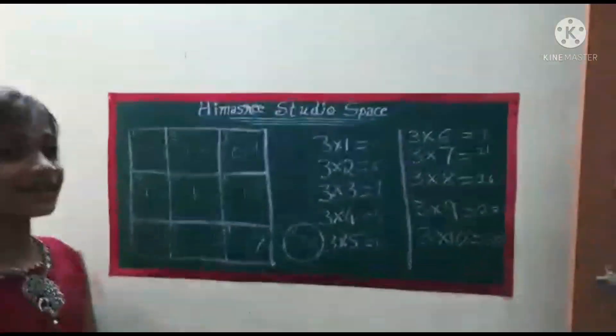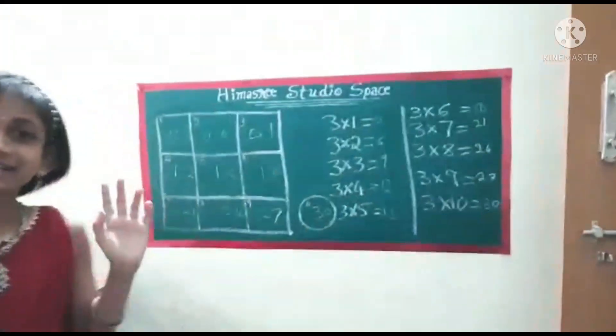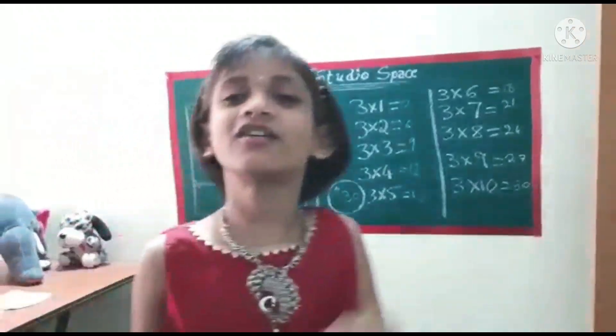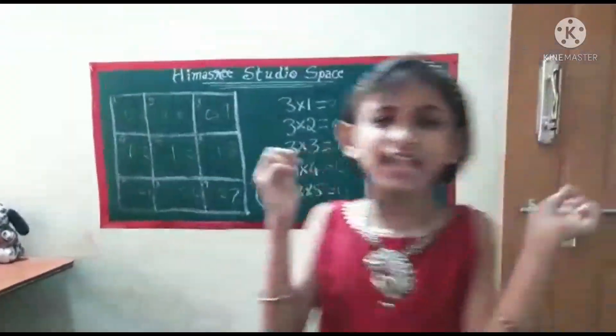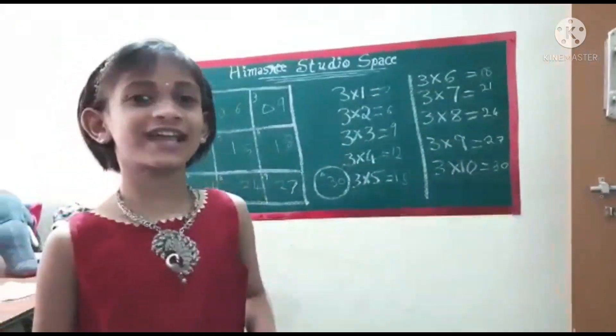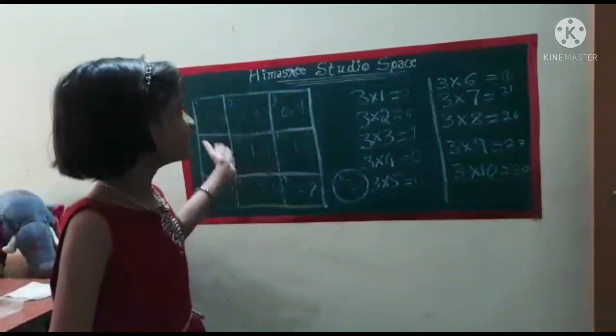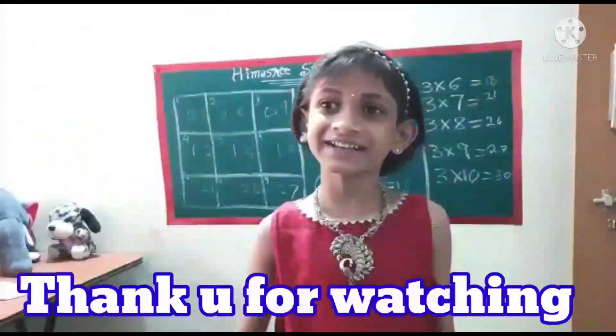Here you go — the 3 times table is solved. Now you guys can know it. You have to learn it and memorize it. Then whenever you have a test with 3 times table or 2 times table, all you have to do is memorize the trick and write it. That's all.